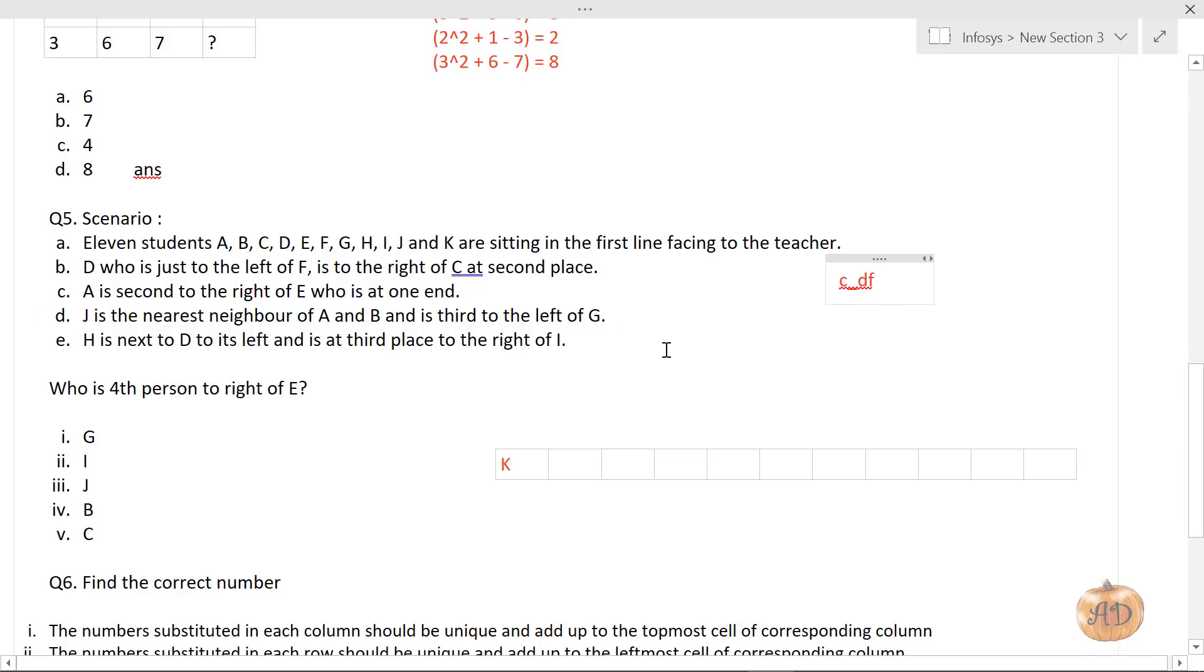Point C says A is second to the right of E who is at one end. The word 'who' refers to E. So E is at one end, we can fix E there. A is second to the right of E, so A is here. We could place E at the other end, but then the condition would be false. So E is here.